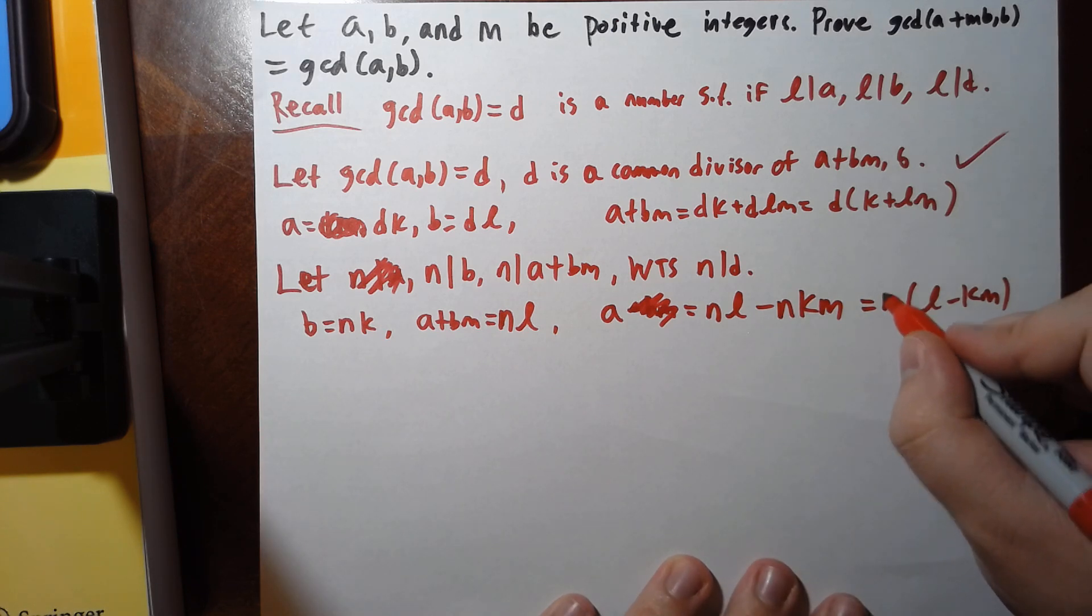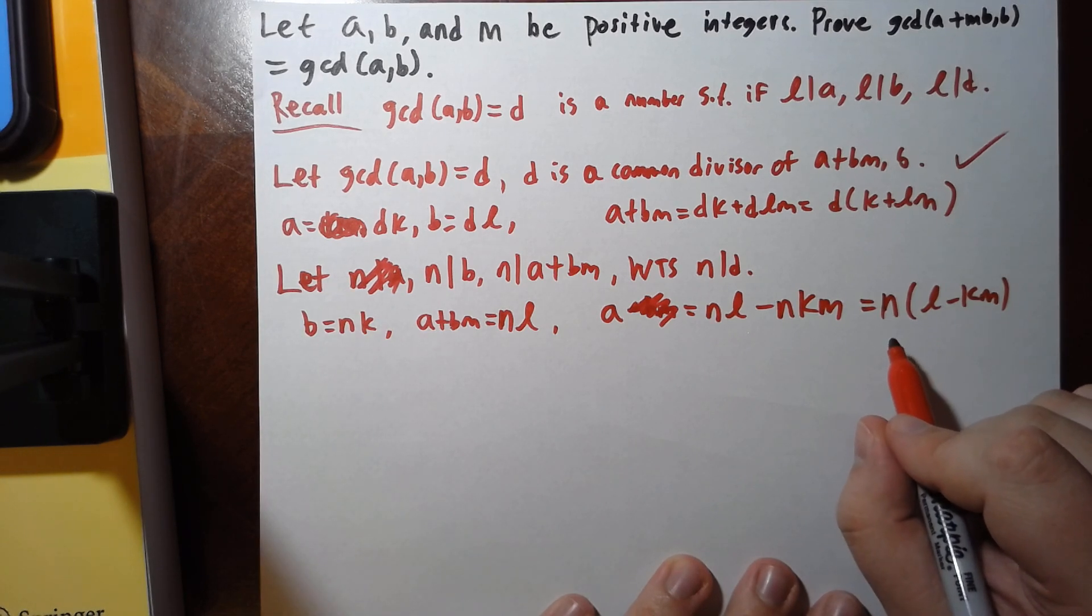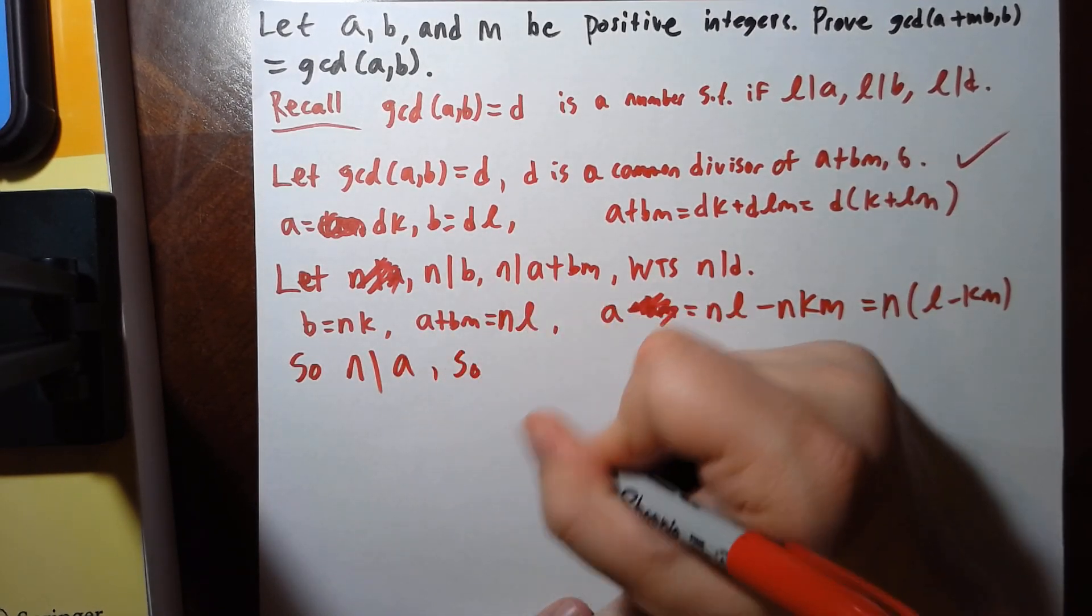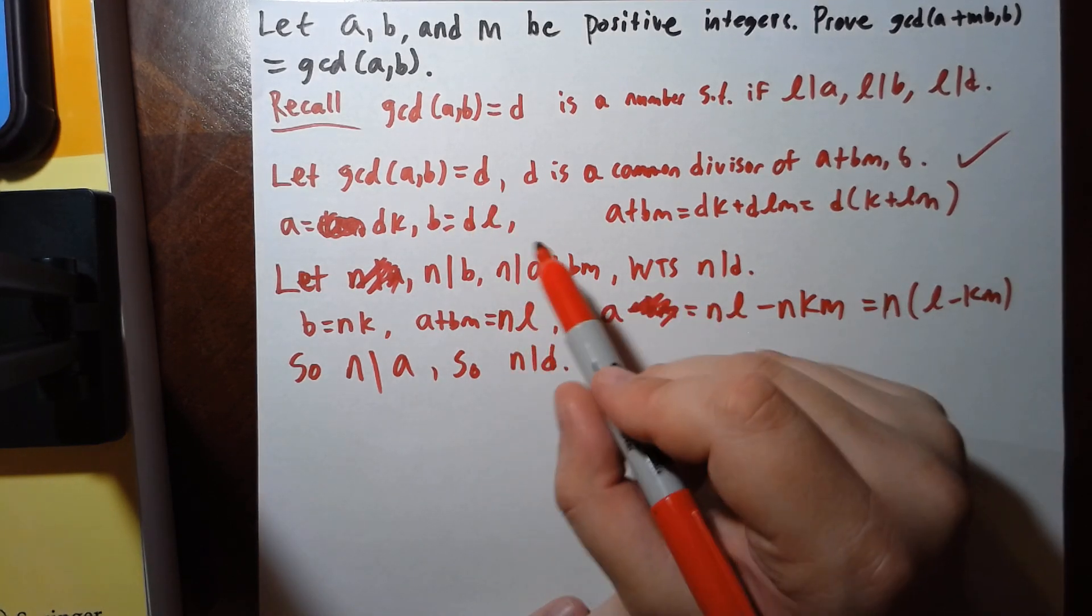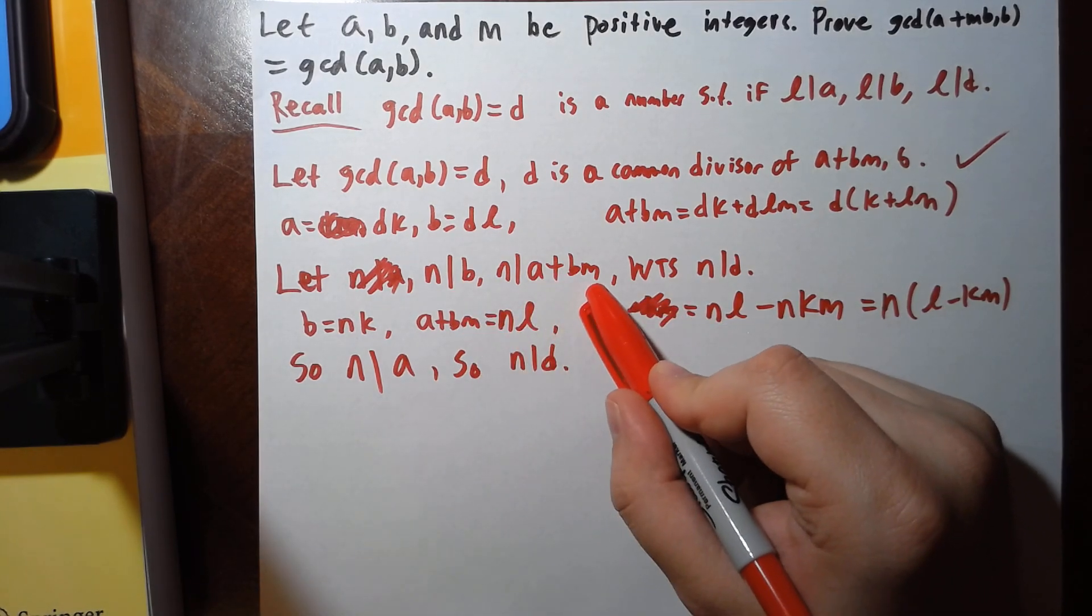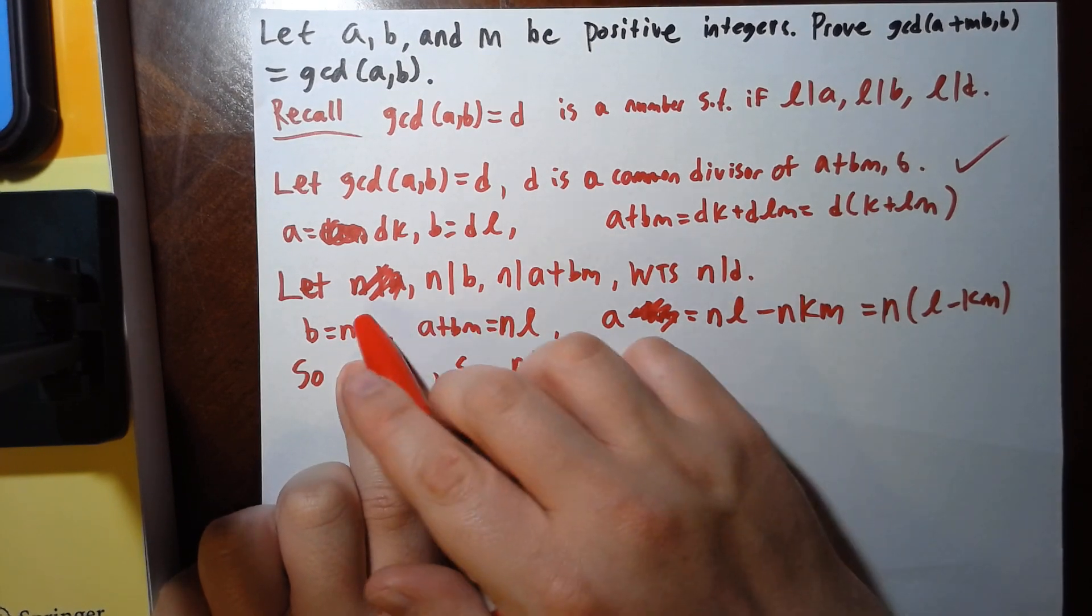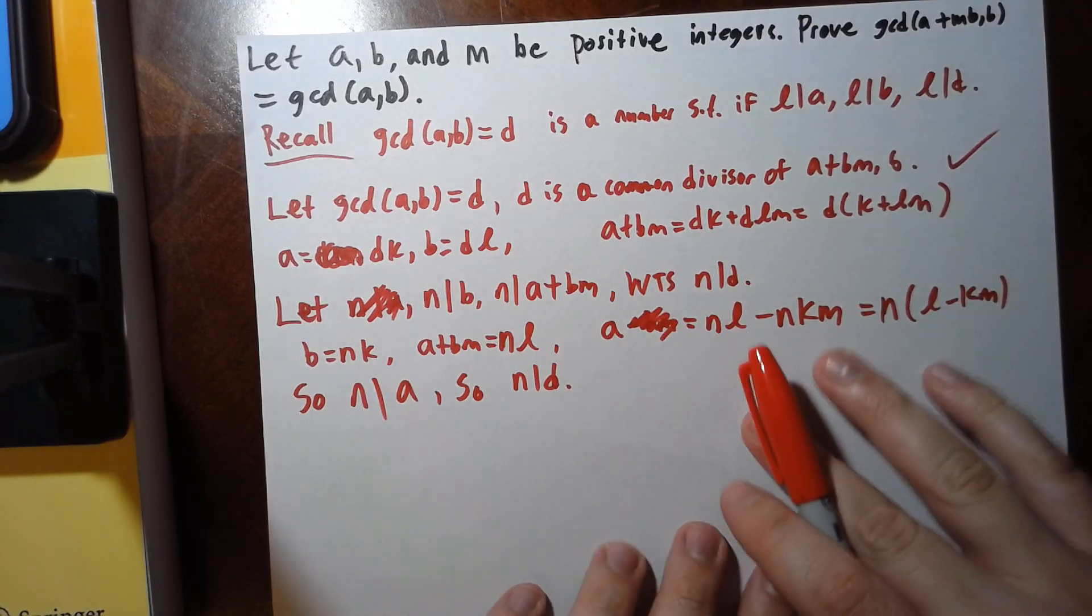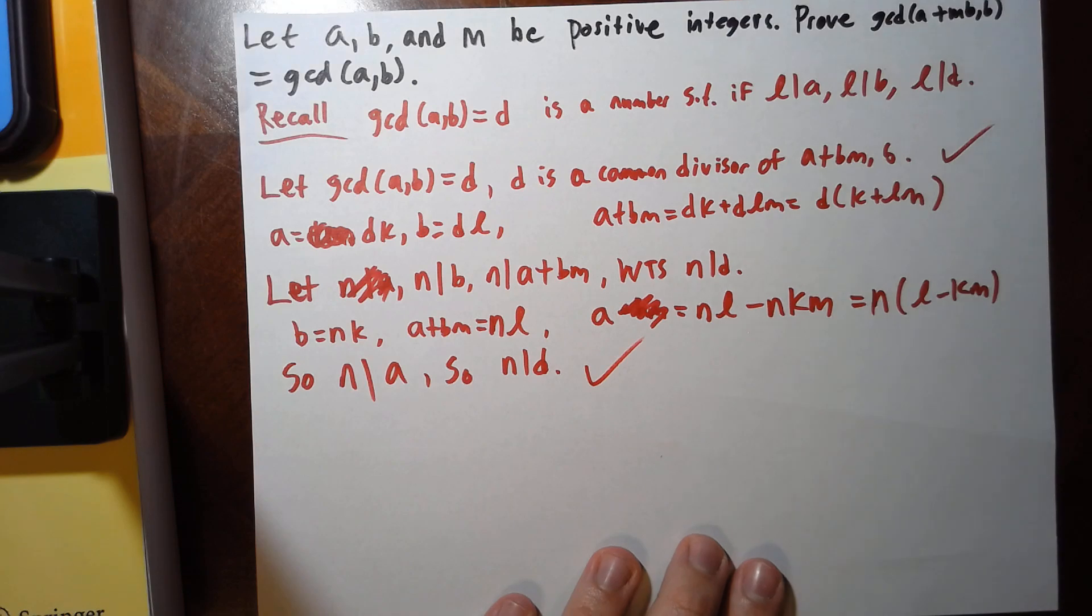So the idea now is we have shown that n divides a. So n must divide d, because d is the GCD of a and b. We showed that if n divides both b and a plus bm, we can write them as shown. Then we subtract bm, factor out the n, and get that n has to divide a. And since n divides a and n divides b, it has to divide the GCD, and we are done. Thanks for watching.